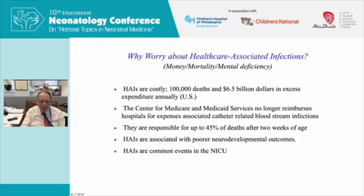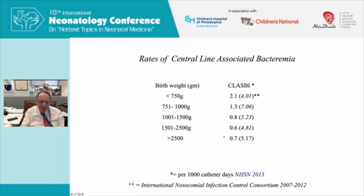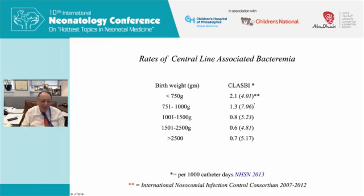Here we have data from two different databases: the National Healthcare Safety Network, a consortium of US hospitals, and — shown in parentheses — data from the International Nosocomial Infection Control Consortium from across the world. On the left are babies of different birth weights, from less than 750 grams to 2500 grams. Looking at the US data, the numbers go down as babies get bigger — smaller babies have increased susceptibility to infection and are often more critically ill.